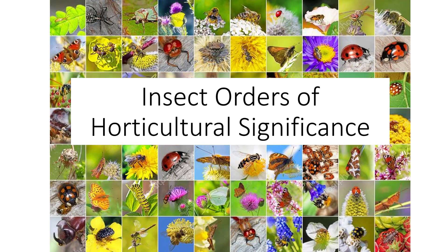Although you may be able to look up an insect based on the plant it is on or how it looks, it is good to know the orders and the characteristics of those orders so that the search can be narrowed. I'm Dr. DeBosk, and this presentation is focused on only 9 important insect orders that include plant pests or natural enemies.